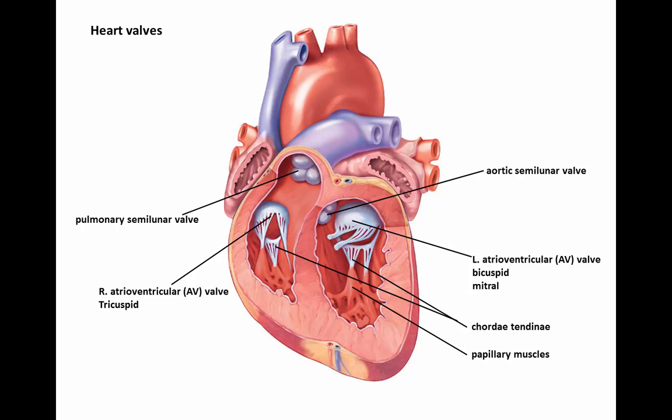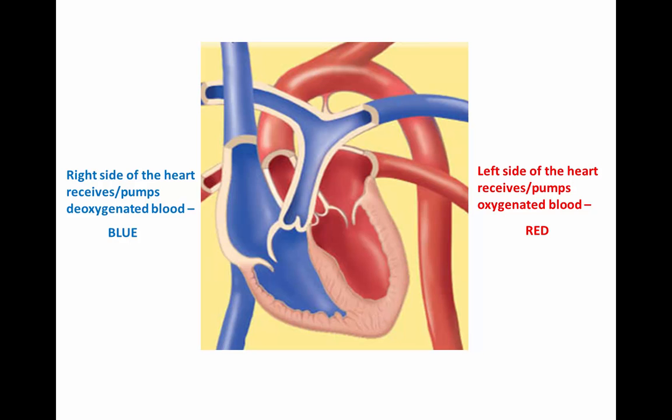The semilunar valves prevent backflow in the pulmonary trunk and the aorta back down into the ventricles. The pulmonary semilunar valve, also referred to as just the pulmonary valve, blocks backflow into the right ventricle. The aortic valve blocks backflow into the left ventricle.